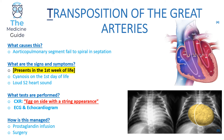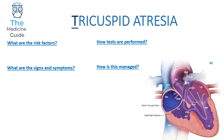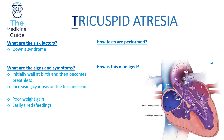Tricuspid Atresia — a major risk factor is Down syndrome. In this condition the tricuspid valve and the entire right side of the heart, including the right atrium and right ventricle, are underdeveloped. Therefore an Atrial Septal Defect and/or a Patent Ductus Arteriosus is essential for survival.